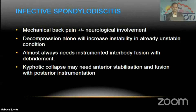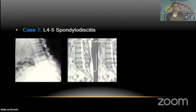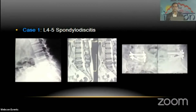Infective spondylodiscitis presents with very severe mechanical back pain, with or without neurological involvement. Decompression done alone in such situations will increase instability in an already unstable condition. These cases almost always need instrumented interbody fusion with debridement. Kyphotic collapse may need anterior reconstruction and fusion with posterior instrumentation, as seen in this case of L4-5 spondylodiscitis with disc space and paradiscal involvement.